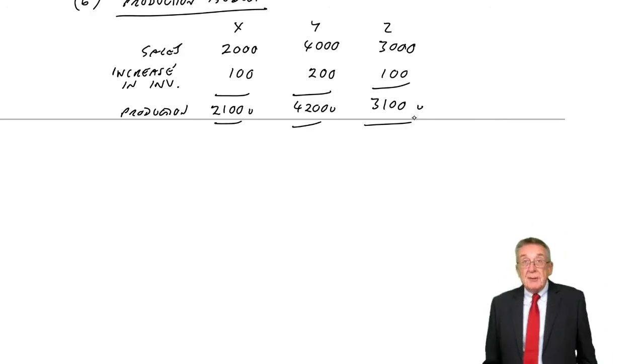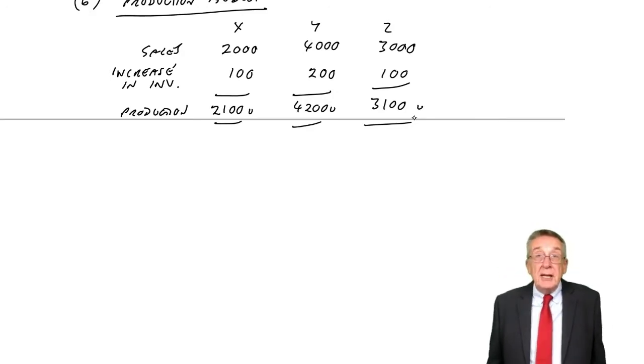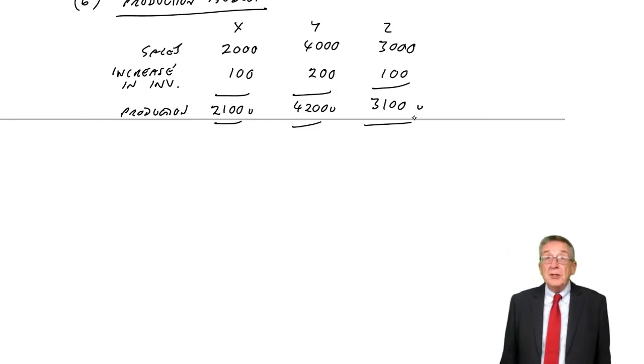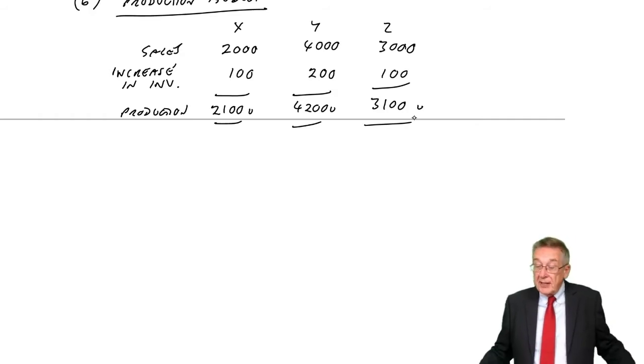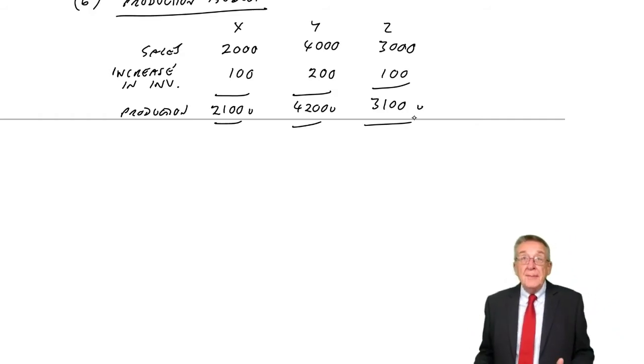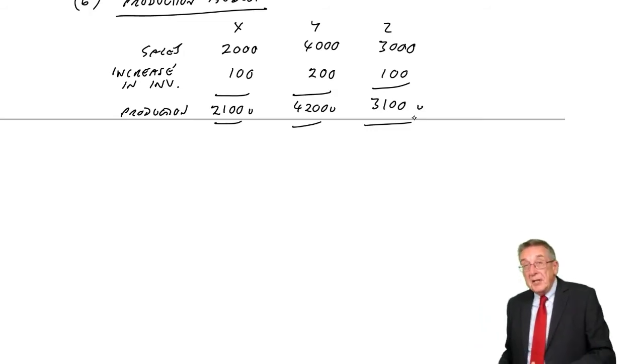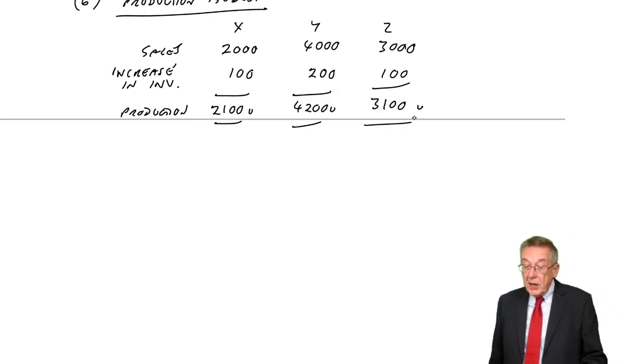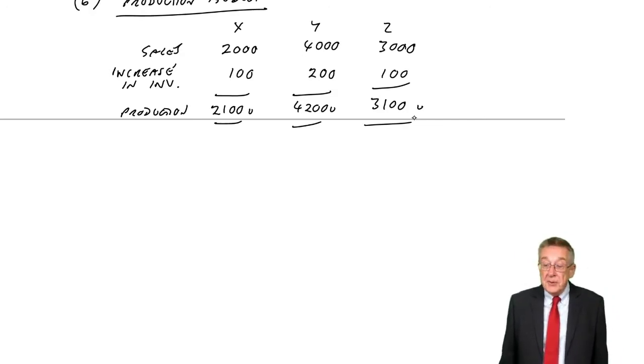It's in units. The production manager isn't interested at the moment in dollars at all. The production manager needs to know how many units we want to produce. See how one budget leads to another. We couldn't do our production until we've budgeted our sales, but we now know how many we intend to produce.